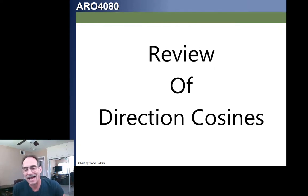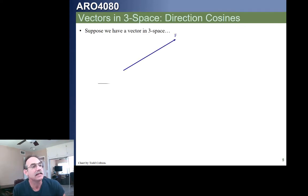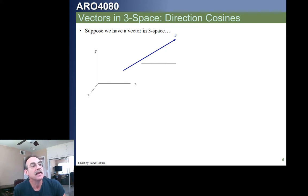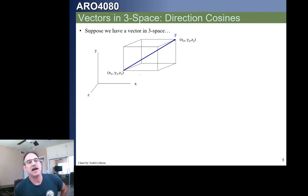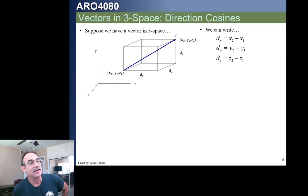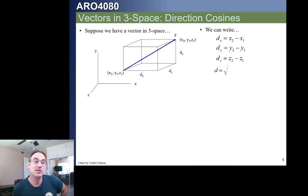Before we do that, let's drop back to statics where we looked at direction cosines. If we have a vector in three space with a coordinate system x, y, z, we can describe the vector from end to end with x, y, and z dimensions. If the first point is x1, y1, z1 and the second is x2, y2, z2, then dx is x2 minus x1, dy is y2 minus y1, and dz is z2 minus z1, with the total length given by the root mean square of those components.